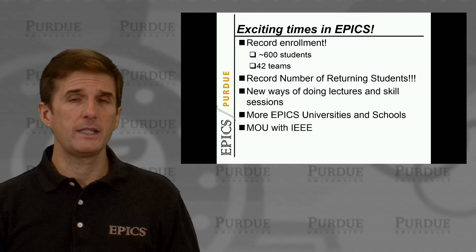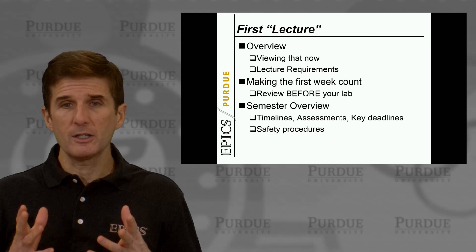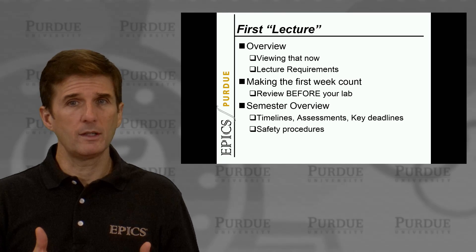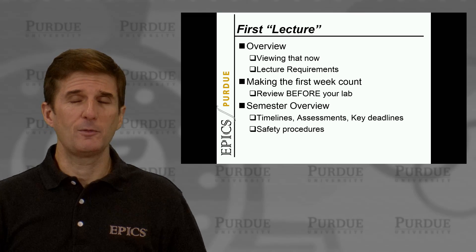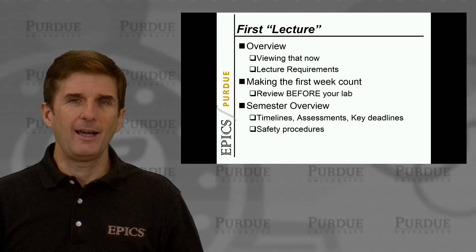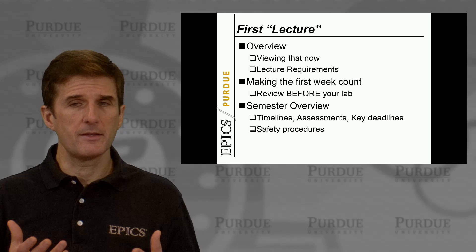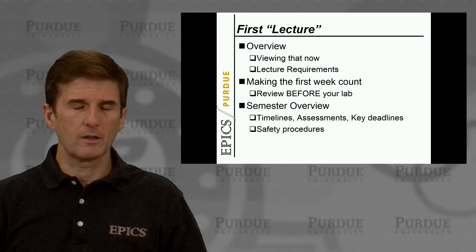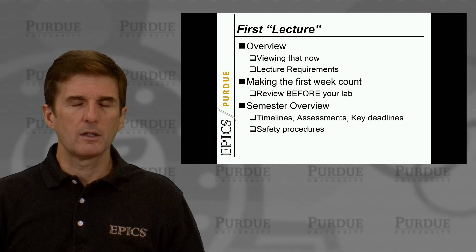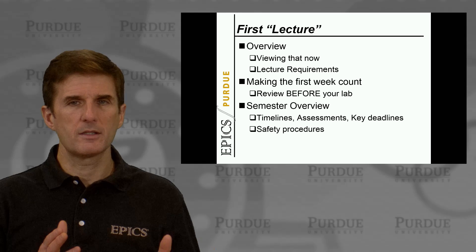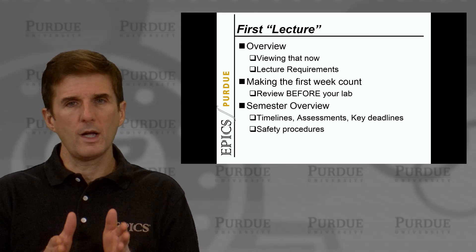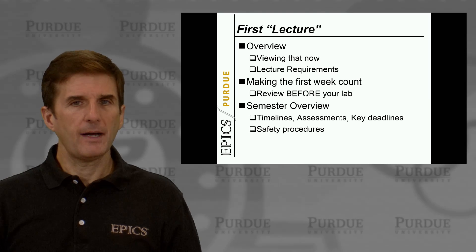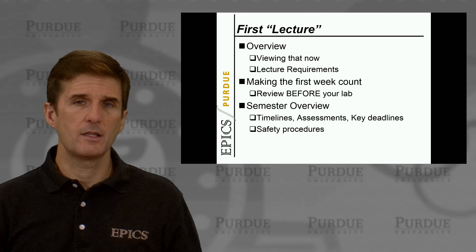As we grow, we need to find new ways of doing things. What we've decided to do this semester is to put content online rather than use the traditional classroom as much. This first lecture or unit is comprised of three different videos. You're watching the first one. In this first block, we'll go over the overview of what we're doing this semester, how we're going to handle lecture requirements, and some other details. The second block is about making that first week count — what should happen in that first meeting — and the final one is a semester overview with a quick look at some of the things we've changed.